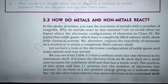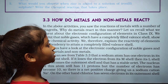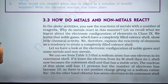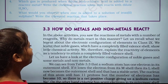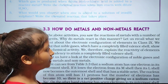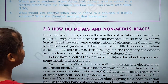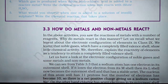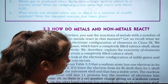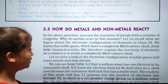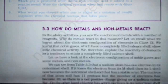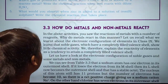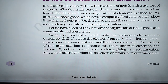Now, how do metals and non-metals react? In the above activity you have seen the reaction of the metal with a number of reagents. Why do metals react? Let us recall what we learnt about the electronic configuration of elements in class 9. We learnt that the noble gases have a completely filled valence shell. We can therefore explain the reactivity of metals as the tendency to attain a completely filled valence shell.